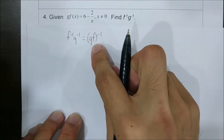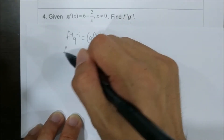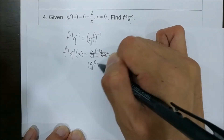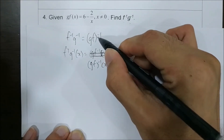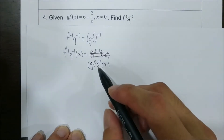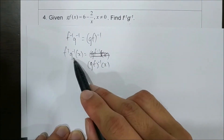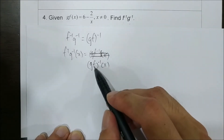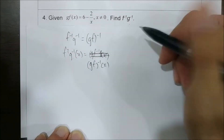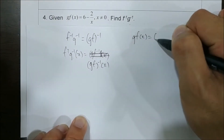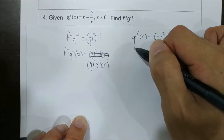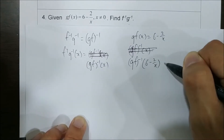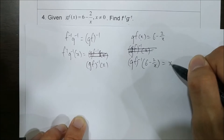This is actually equal to this. So f inverse g inverse of x equals to (gf) inverse of x. Since we are looking for this, we only have to find the inverse of gf. So: gf inverse of (6 minus 2x) equals to x — these two switch positions.